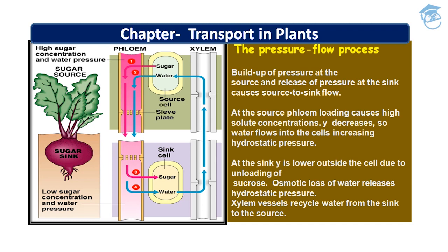That was all about the pressure flow model and phloem transport. In my next section of the presentation, we will be studying a simple experiment that shows phloem is the tissue responsible for translocation of food, and that transport takes place in one direction, towards the root. Thank you and stay tuned.